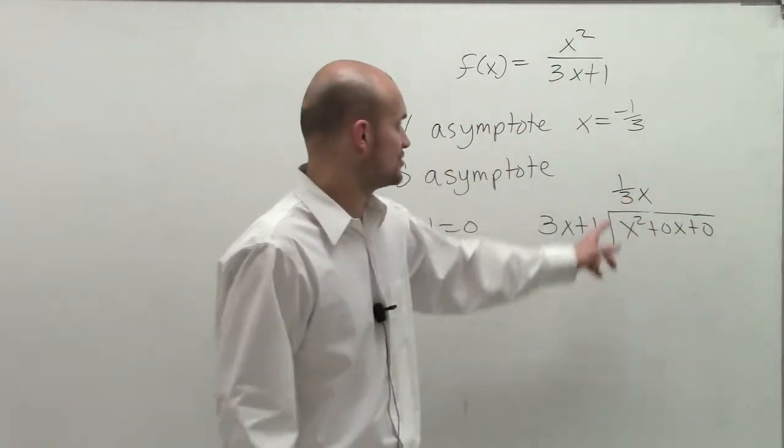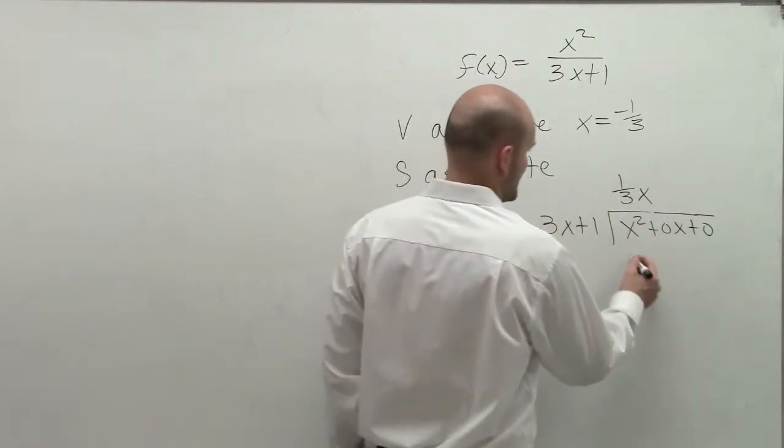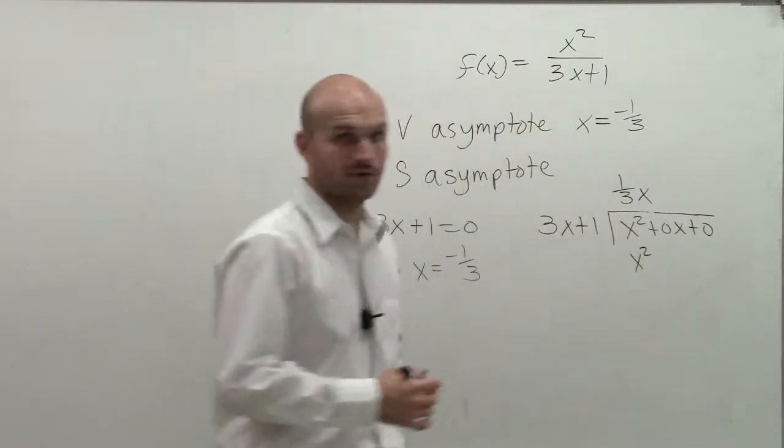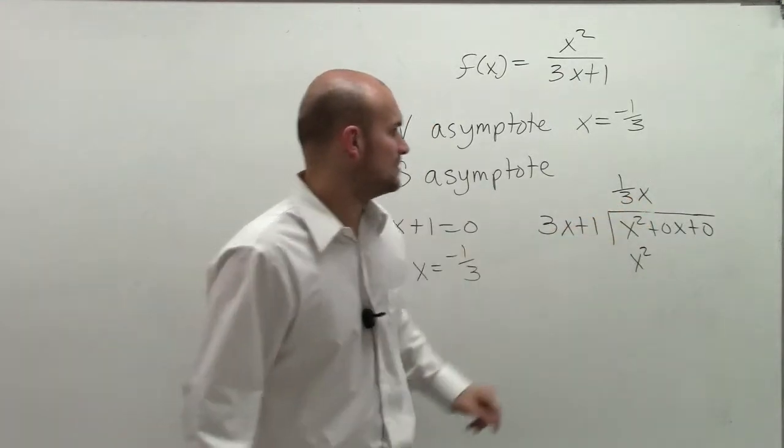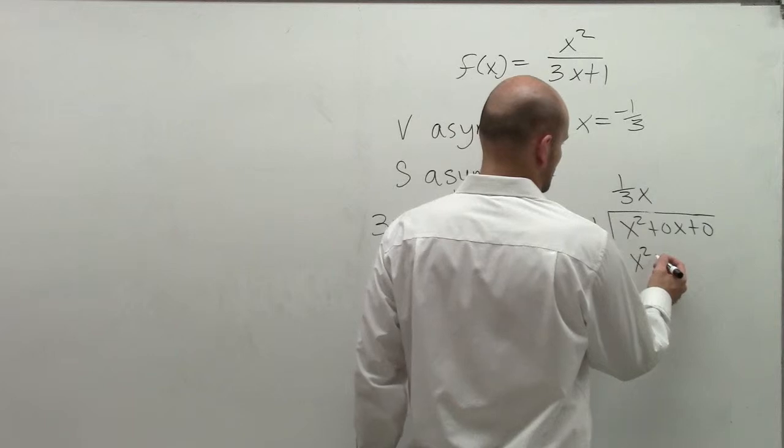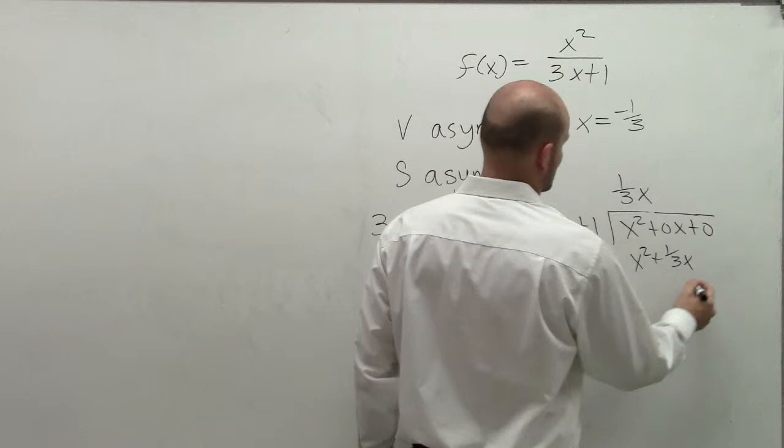I can double check that. Does 1/3 x times 3x give me x squared? Yes, it does, so it works. Then I have 1/3 x times 1, which is going to give me a positive 1/3 x.